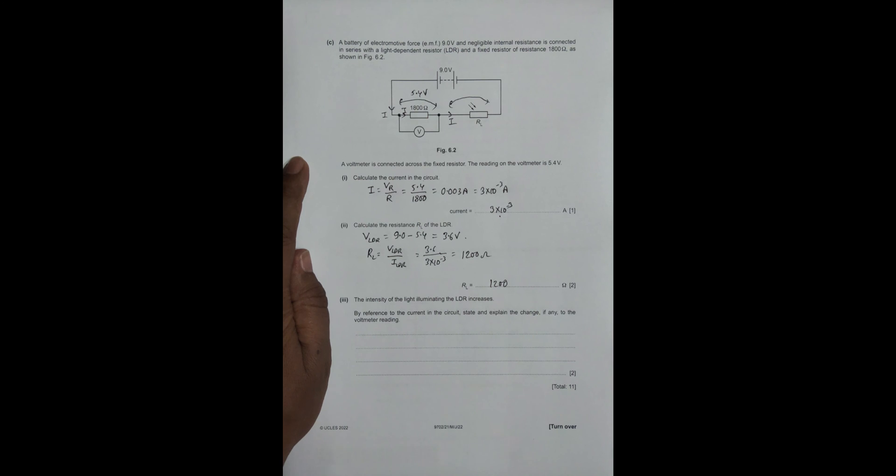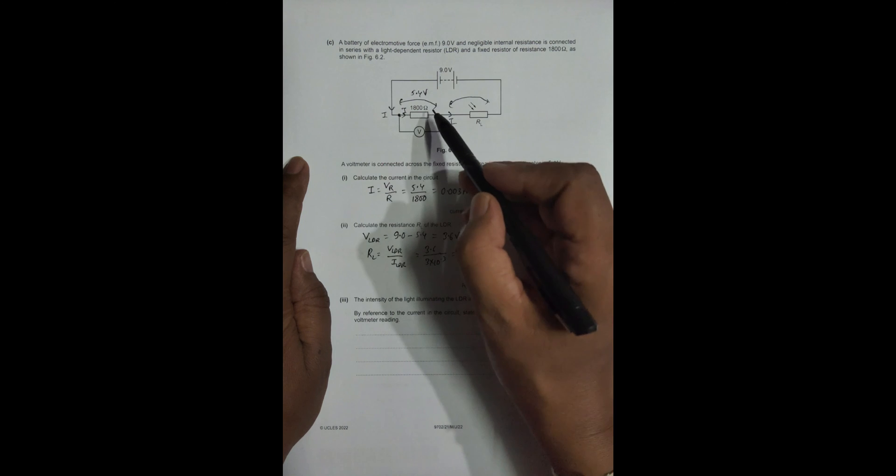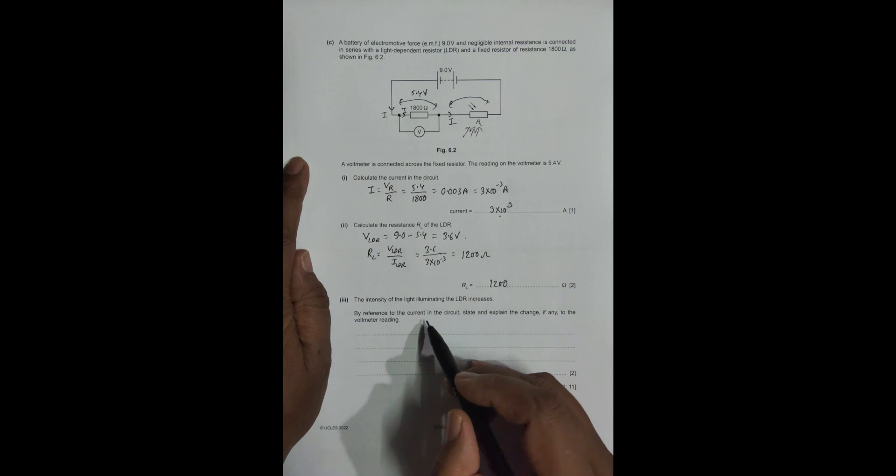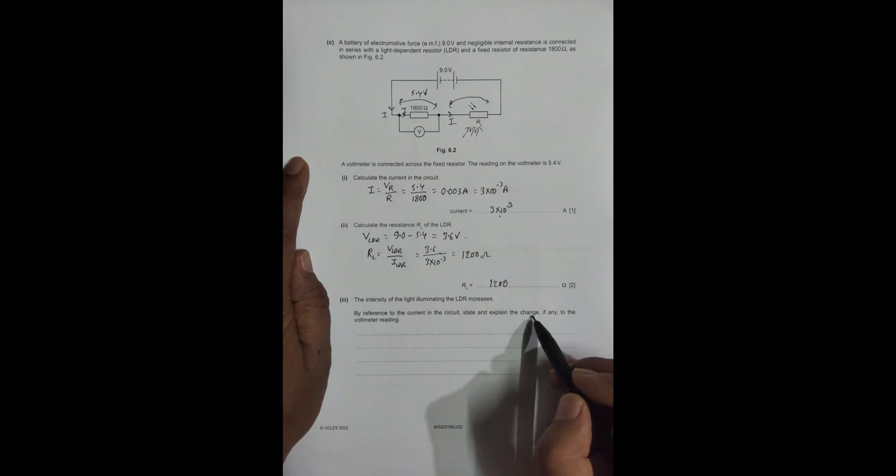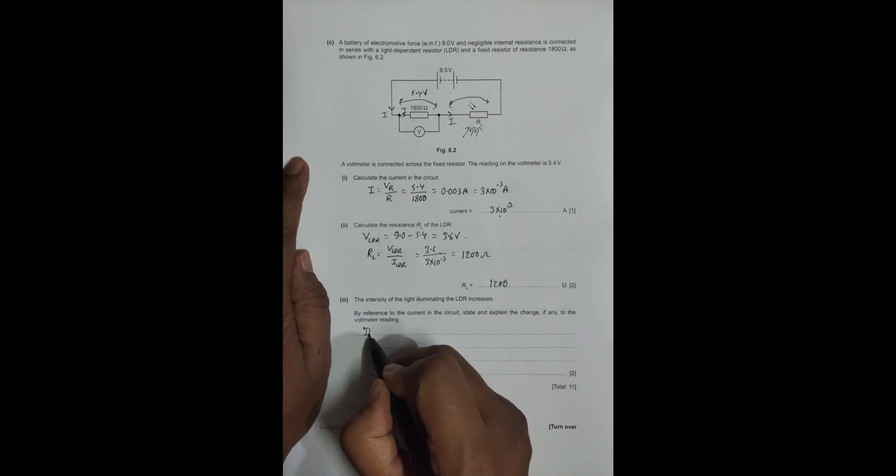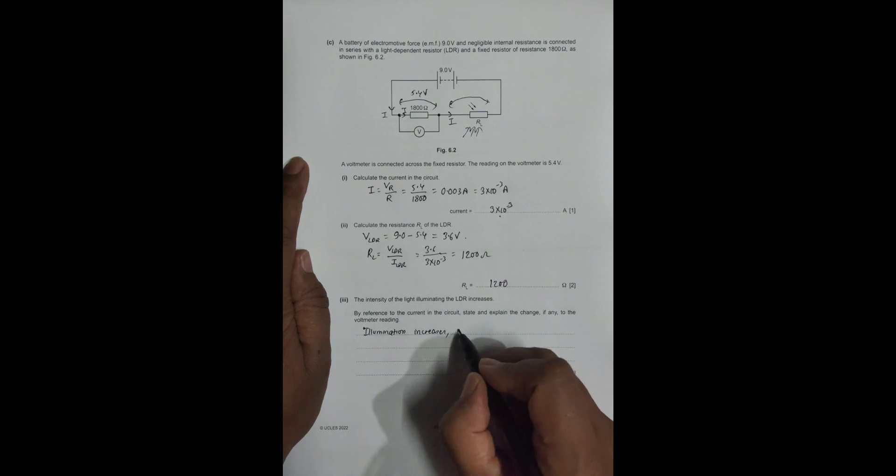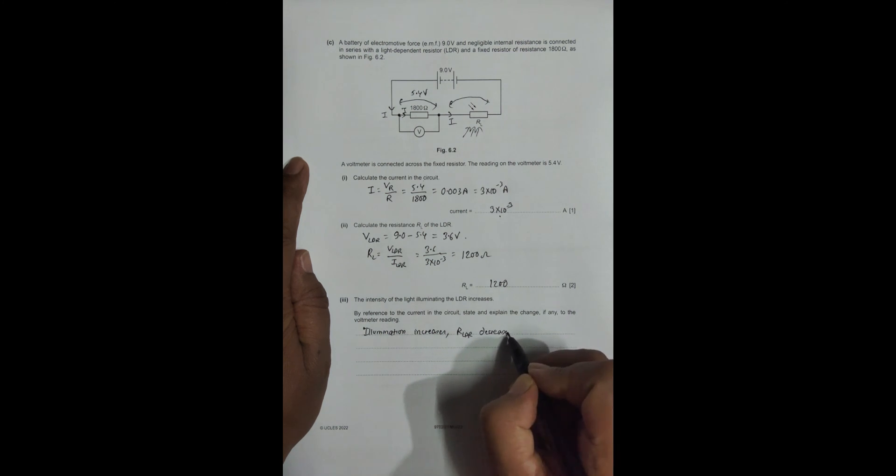The intensity of the light illuminating the LDR increases. By reference to the current in the circuit, explain the change, if any, on the voltmeter reading. If illumination increases, the resistance of the LDR decreases—this is the property of an LDR.